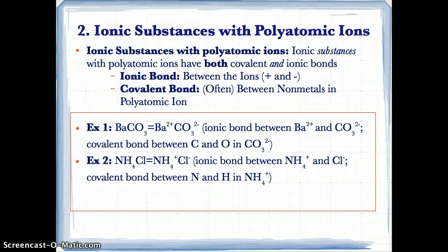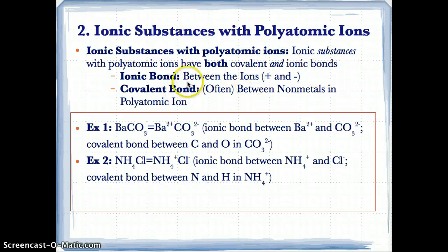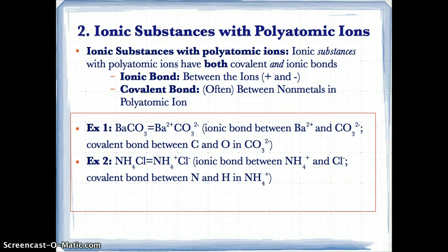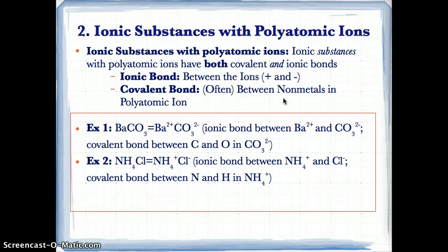Let's start by talking about ionic substances with polyatomic ions. Polyatomic ions are usually made up of many nonmetal atoms put together to form a single charge. As a result, ionic substances with polyatomic ions usually have both covalent and ionic bonds. The ionic bond is between the positively charged ions and the negatively charged ions — ionic bonds contain attractions between oppositely charged ions. Covalent bonds exist between all the nonmetals in a polyatomic ion.